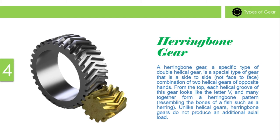Herringbone gear: A herringbone gear, a specific type of double helical gear, is a special type of gear that is a side-to-side, not face-to-face, combination of two helical gears of opposite hands. From the top, each helical group of these gears looks like the letter V, and many together form a herringbone pattern resembling the bones of a fish such as a herring. Unlike helical gears, herringbone gears do not produce an additional axial load.